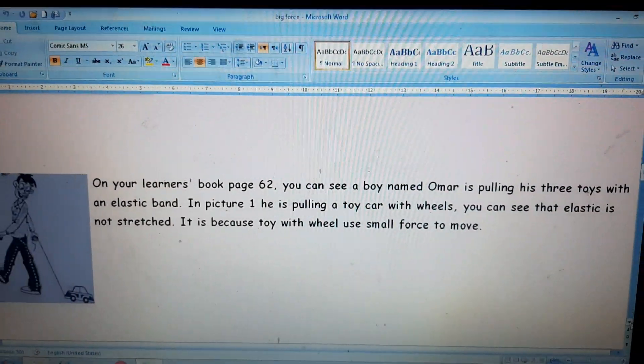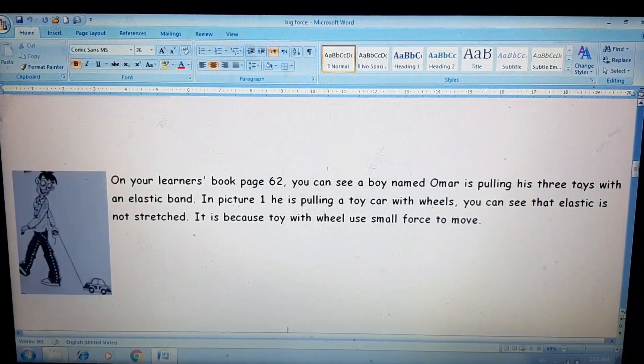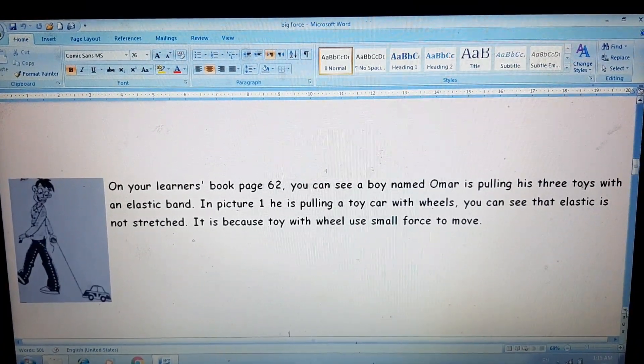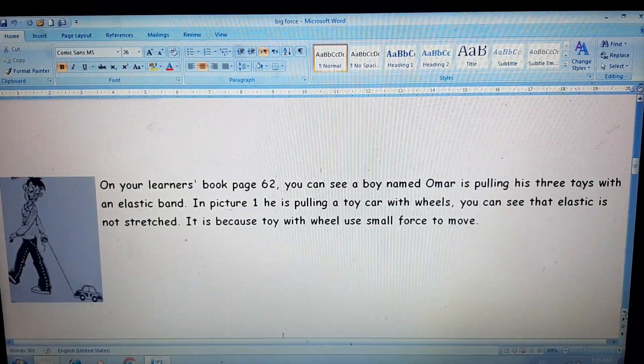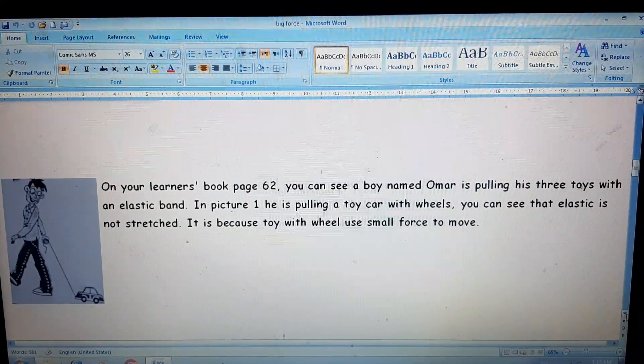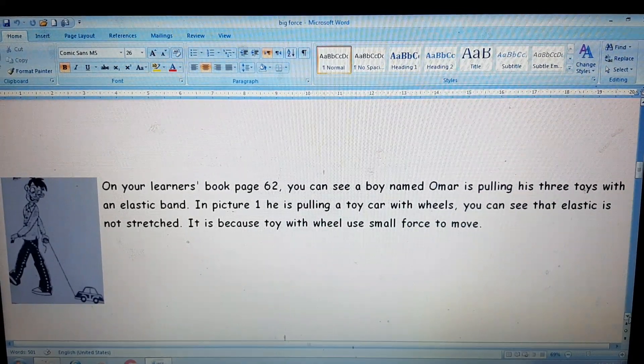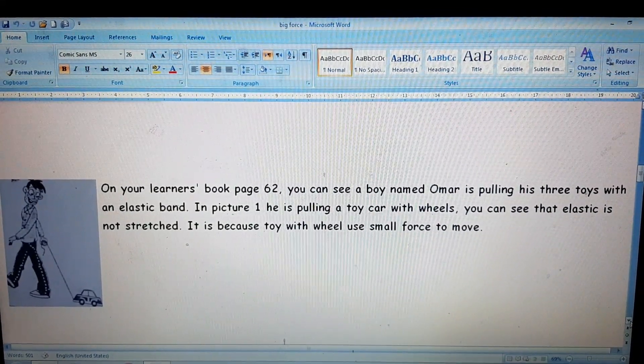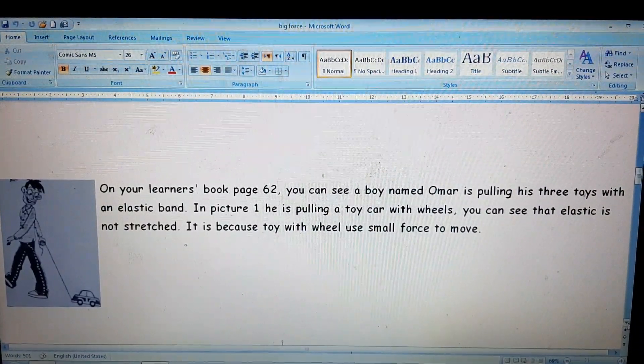Now if you look at your learner's book page number 62, you can see a boy pulling three kinds of toys. In the first picture, you can see a boy named Omar pulling his toy car with an elastic band. You can see that elastic is not stretched. It is because the toy car has wheels and toys with wheels use small force to move.